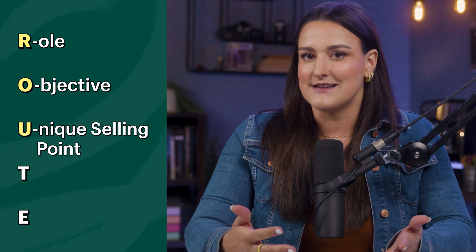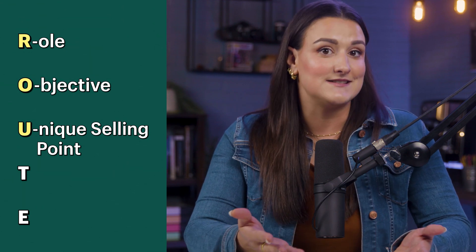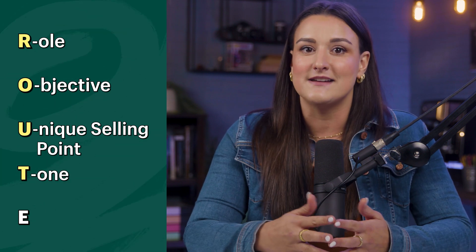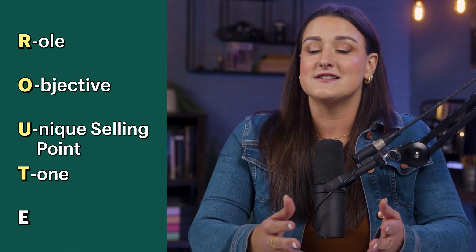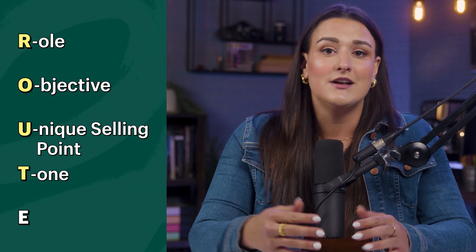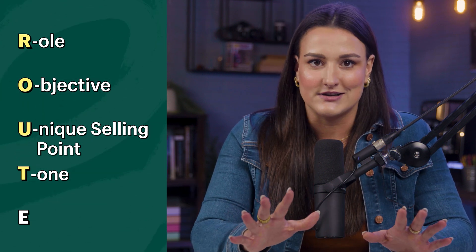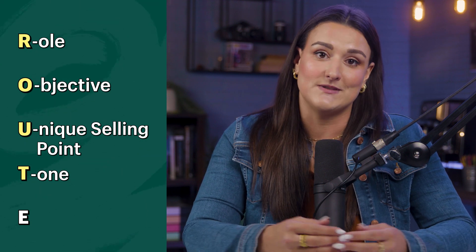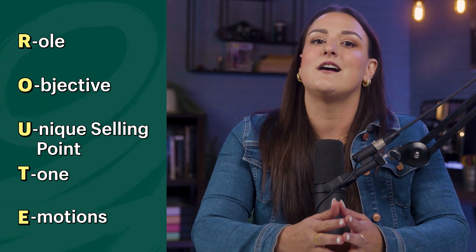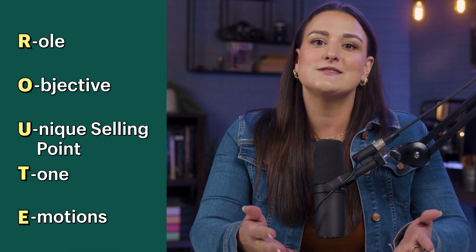U stands for unique selling point. We outline essential elements that make us stand out. Start this sentence with 'what makes us unique is.' T stands for tone. We include what style we want to convey based on what we already know about our brand. Some good ideas for tones are friendly, conversational, heartwarming, playful, inspirational, motivational, serious, sales-driven, persuasive, educational, and more. You can mix and match all different tones to get a more specific output. E stands for emotions. We direct the AI to craft content that resonates on an emotional level with a specific audience. This will help strengthen the connection with them. Start this with 'highlight.'